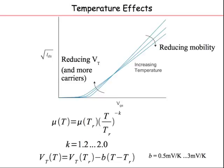Temperature has a very interesting effect because there are two contrary phenomena. As temperature increases, mobility reduces — the carriers become very agitated, scatter more, and make less forward progress. But at the same time, threshold voltage also reduces. This is because at higher temperature there is more bond breaking, more minority carriers are available, so the channel can be inverted at a lower gate voltage. So both mobility and Vt decrease with increasing temperature.